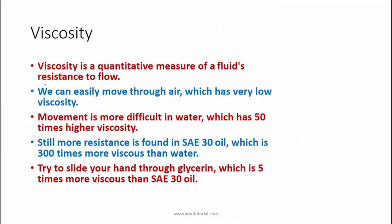Another important property is viscosity, which is the inherent property of a fluid that offers resistance to flow. Viscosity is a quantitative measure of a fluid's resistance to flow. For example, in air we can move easily because there is very little resistance. In water, which has about 50 times more viscosity than air, water applies much more resistance to flow, so viscosity plays a role in resisting motion.